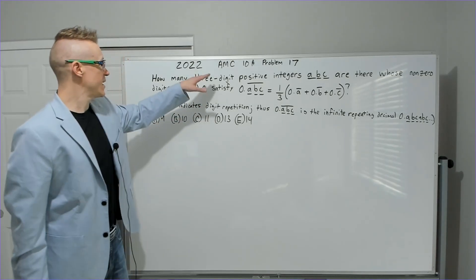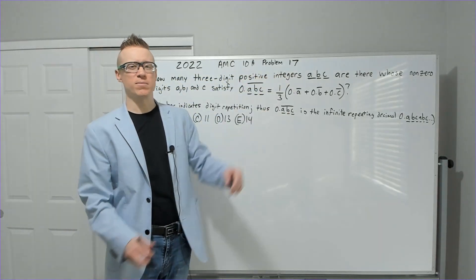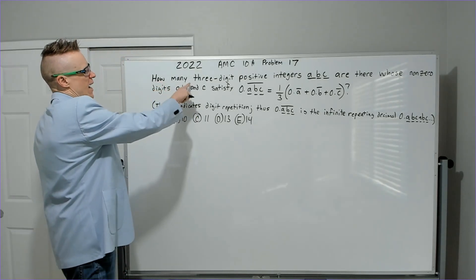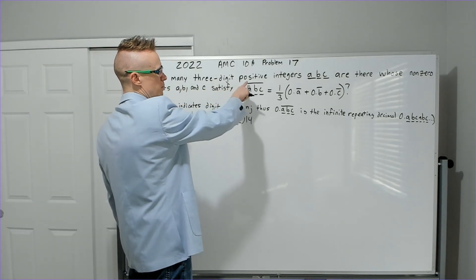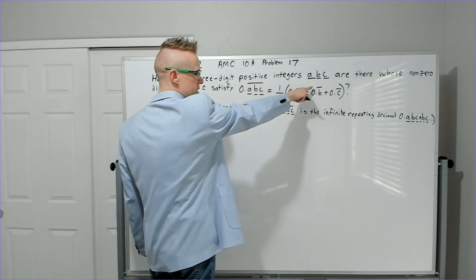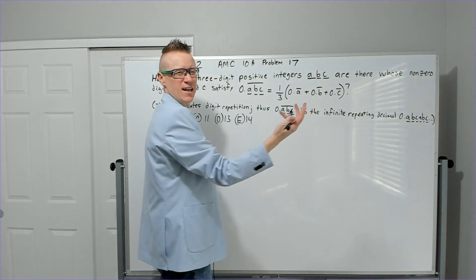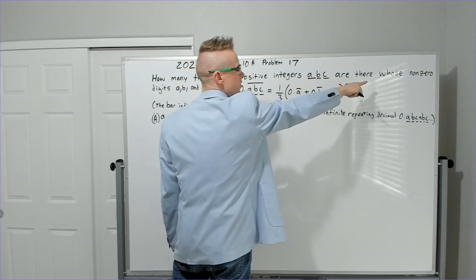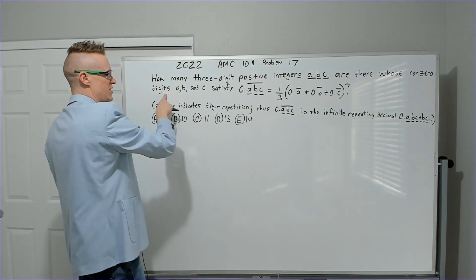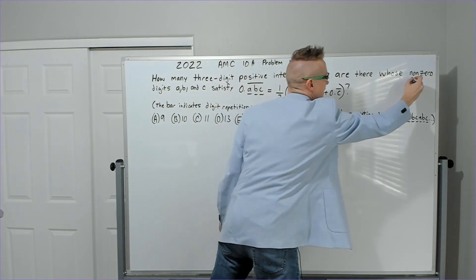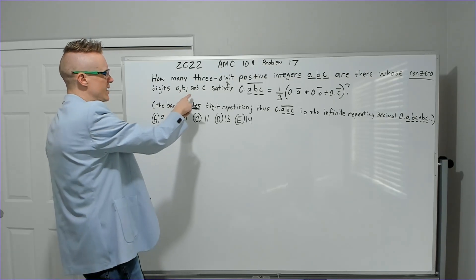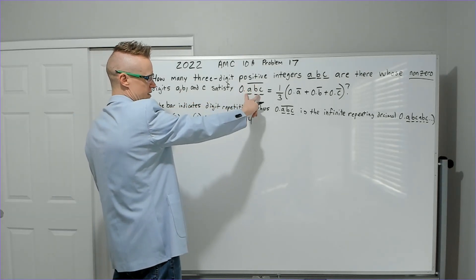Let's get on to this AMC 10A problem number 17 from the year 2022. How many three-digit positive integers ABC are there whose non-zero digits A, B, and C satisfy this equation?